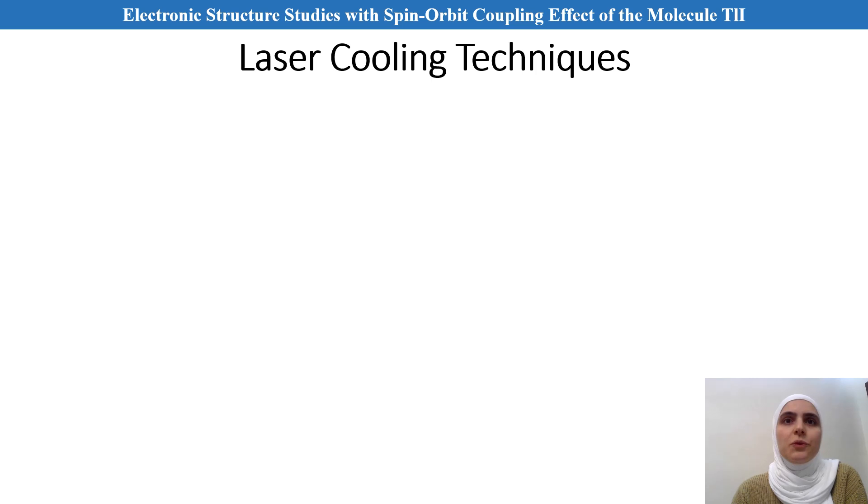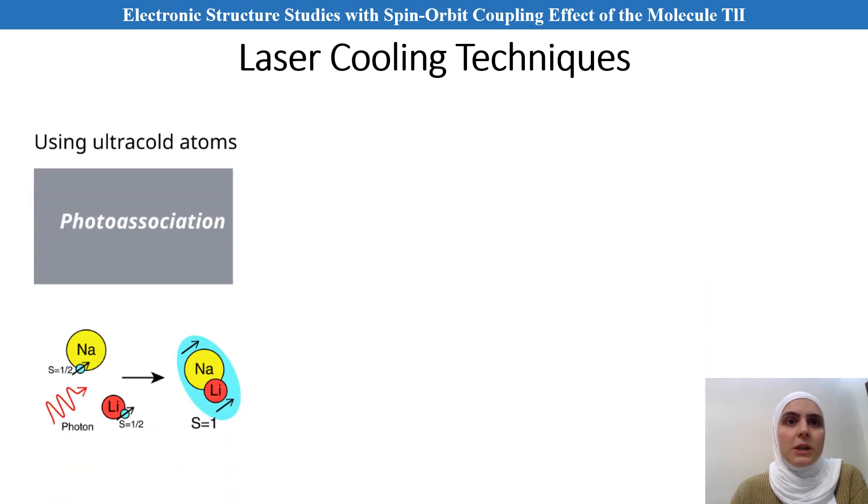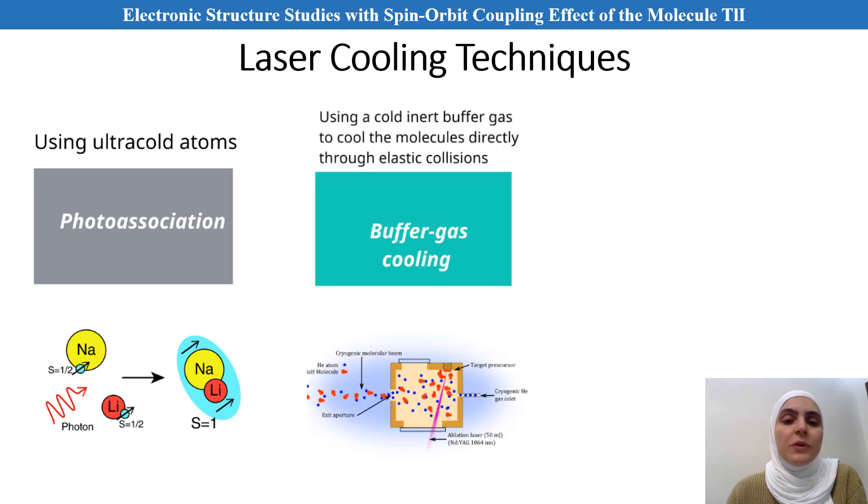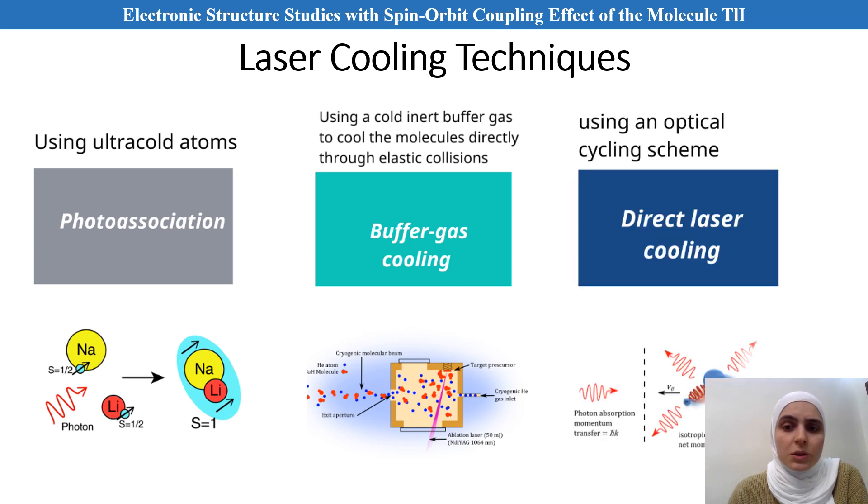This can be achieved via different techniques, some of them are indirect methods such as photo-association or the free-bound absorption. Photo-association is the process where two colliding atoms collectively absorb a photon, forming a bound excited state molecule, or via buffer gas cooling, which uses a cold inert buffer gas like nitrogen, helium, or argon to cool the molecules directly through elastic collision. In addition to the direct laser cooling, which is using an optical cycling scheme, this leads to reach ultra-cold molecules of temperature less than one milli Kelvin.